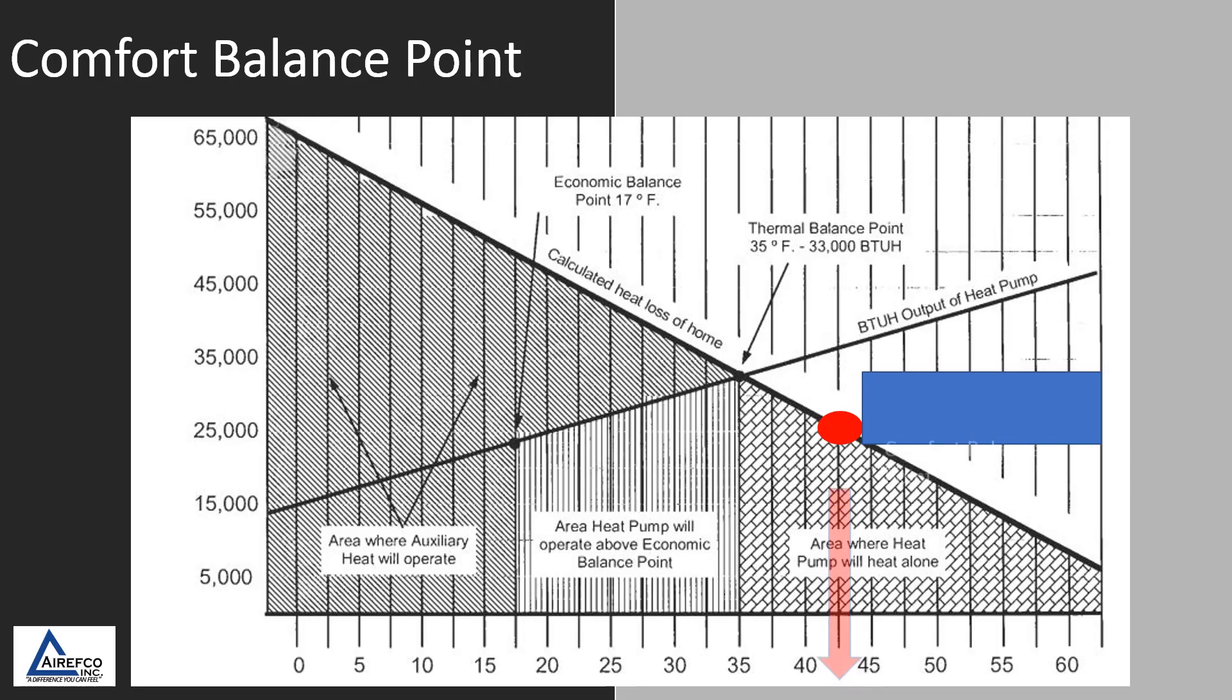The third balance point that you want to take into consideration is the comfort balance point. This point is normally a lot higher than your thermal or economic balance point. You have to take into consideration people who are generally colder than normal, and a normal thermal balance point or an economic balance point would make the house way too cold for their comfort.